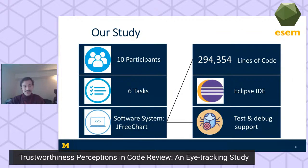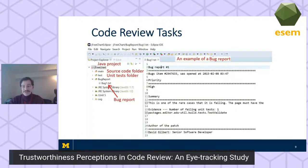For our study, we recruited 10 participants and offered each of them six tasks pertaining to the software system JFreeChart, which has nearly 300,000 lines of code. Participants had access to the code through the Eclipse IDE, where they could test and debug unit tests, view the full code and classes, and see the bug report showing the patch and the labeled author. To control for actual patch quality, we randomized which author label participants saw — machine-generated or human-generated.